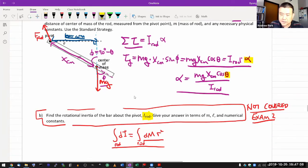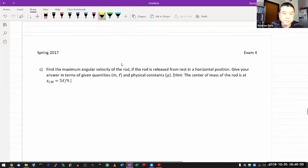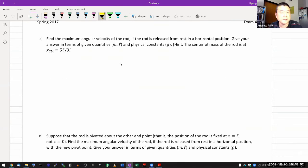So we are skipping B. You don't need to do this for the exam. Let's look at C. Find the maximum angular velocity of the rod if the rod is released from rest in a horizontal position. And hopefully, as you look at this question, you have this intuitive sense that, alright, so I'm releasing the rod from this completely horizontal position.